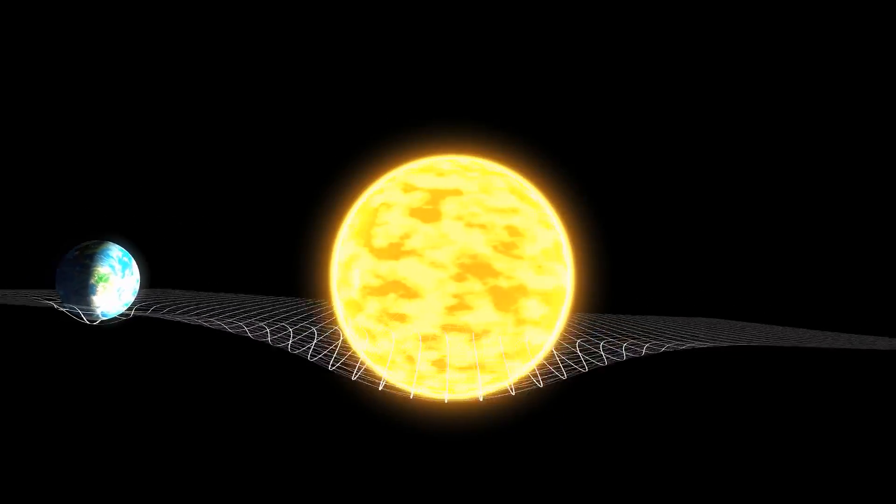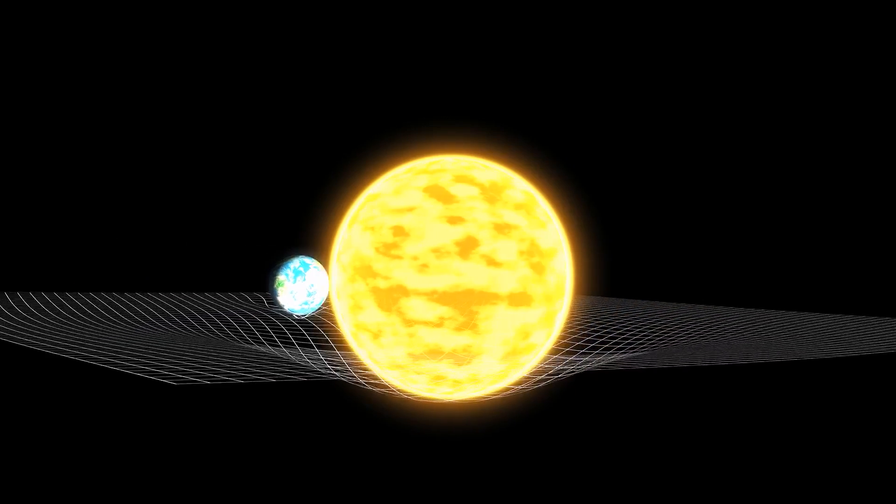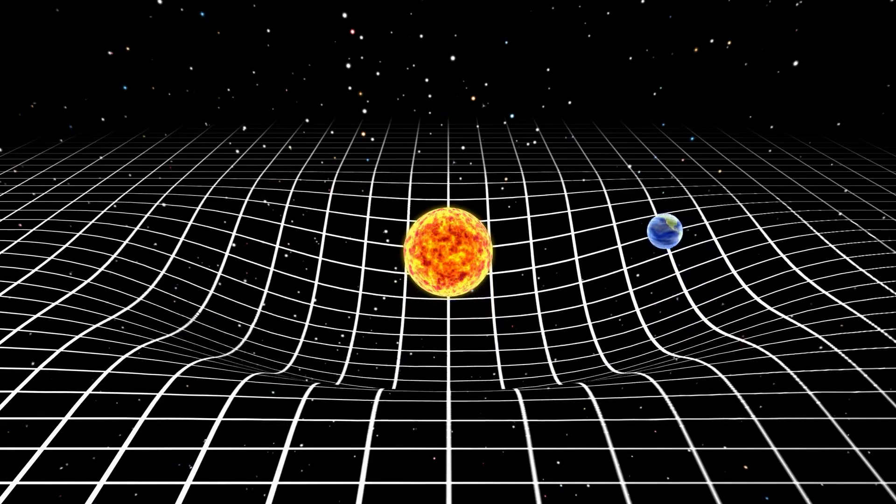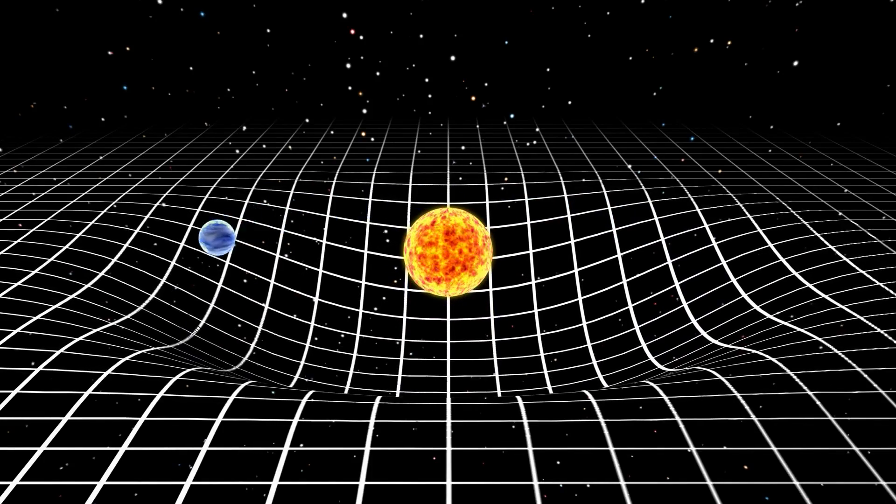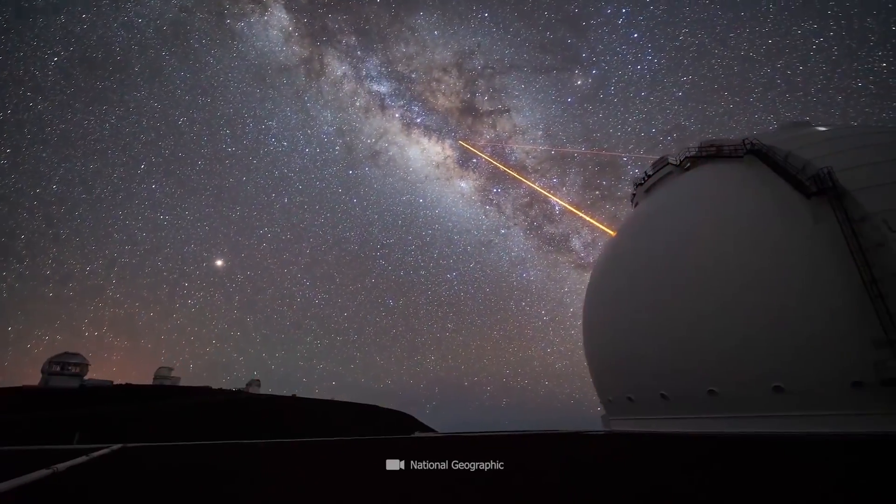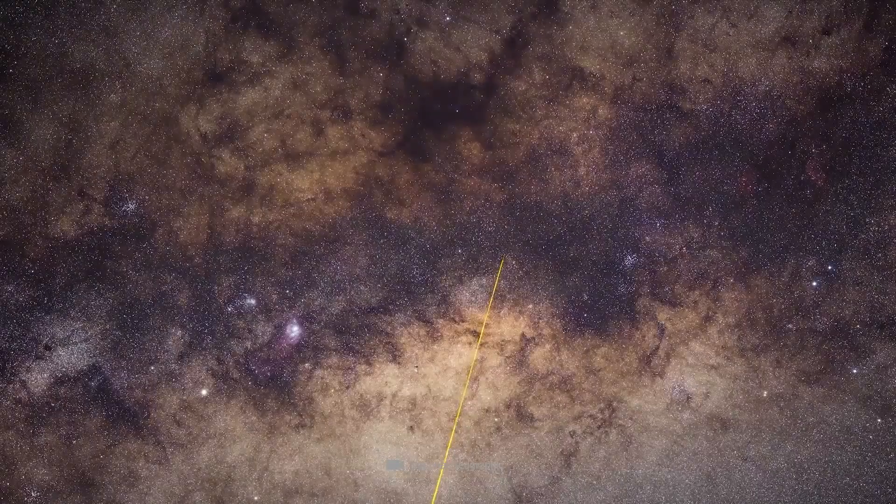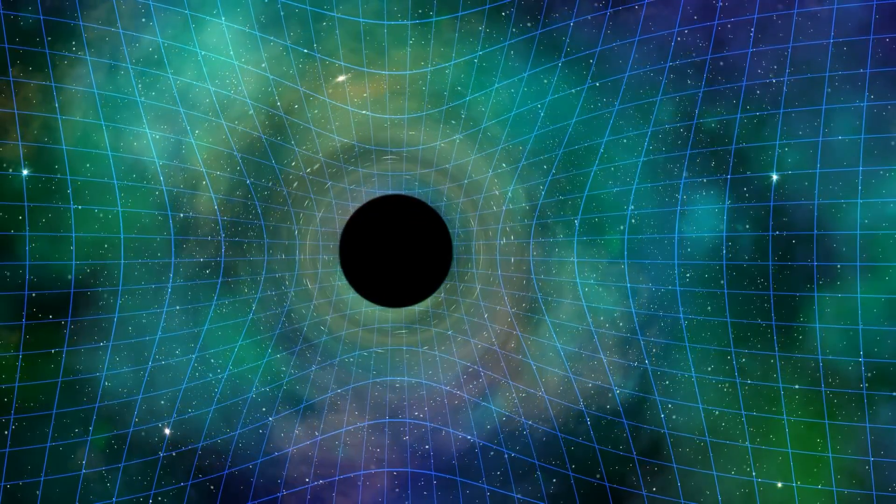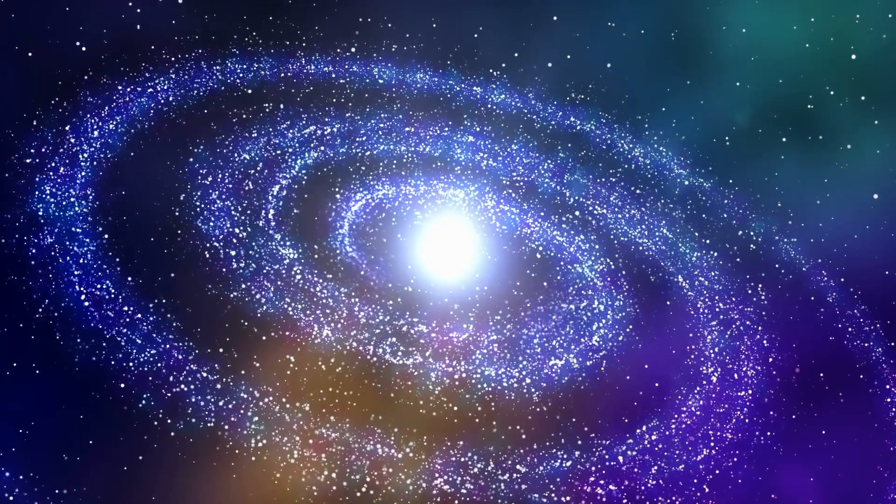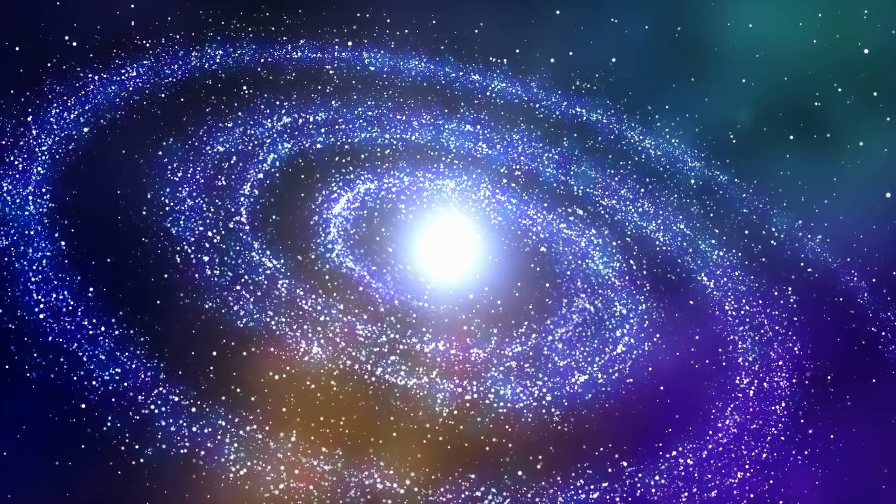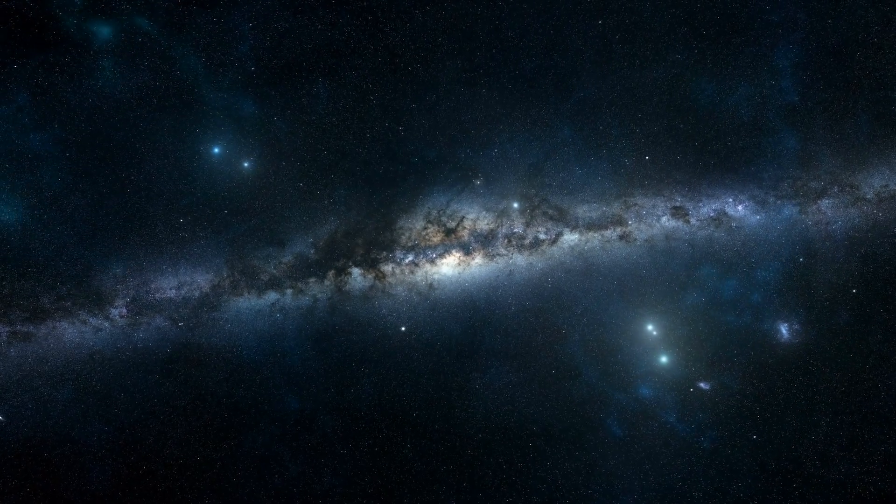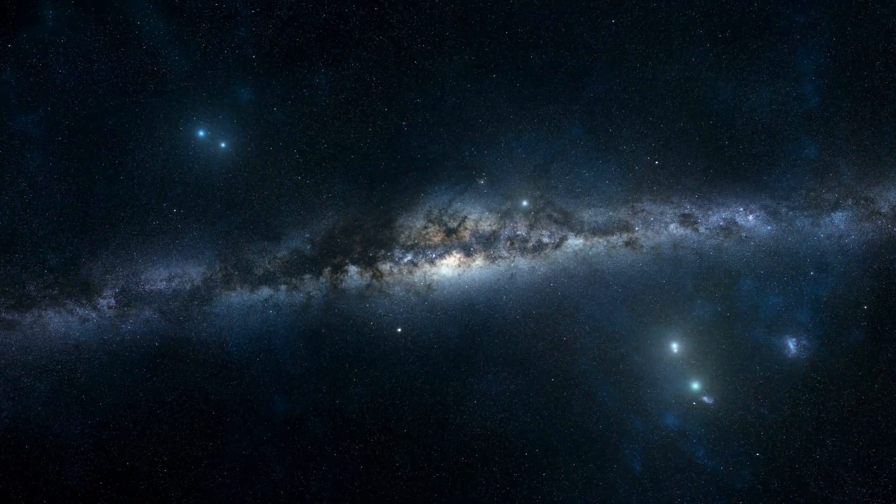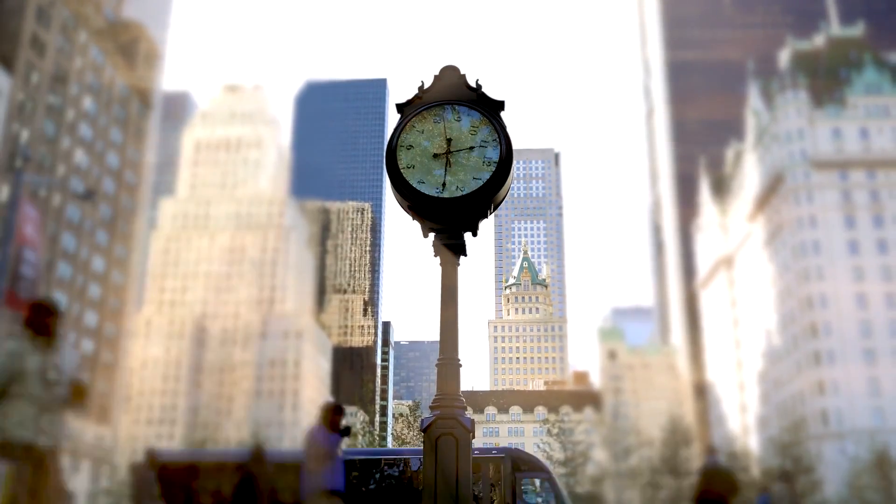Einstein's special theory of relativity deals with the behavior of time and space from the point of view of observers moving relative to each other. The subsequent general theory of relativity attributes gravity to a curvature of time and space, which results from the effects of the masses involved. In simple terms, this means space possesses a three-dimensional shape, while time represents a fourth dimension.